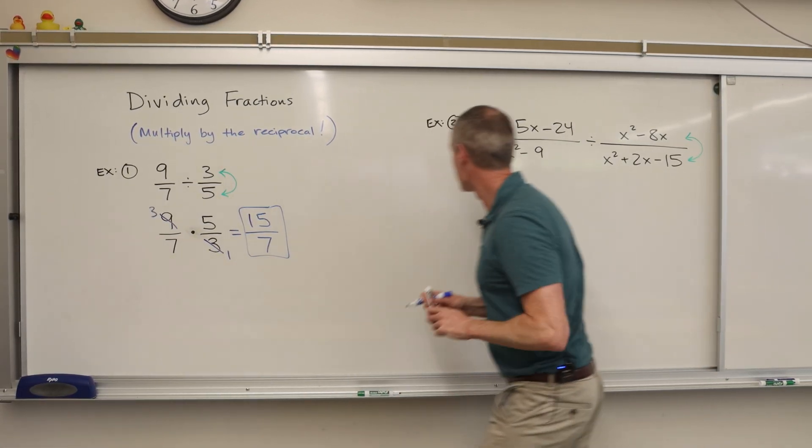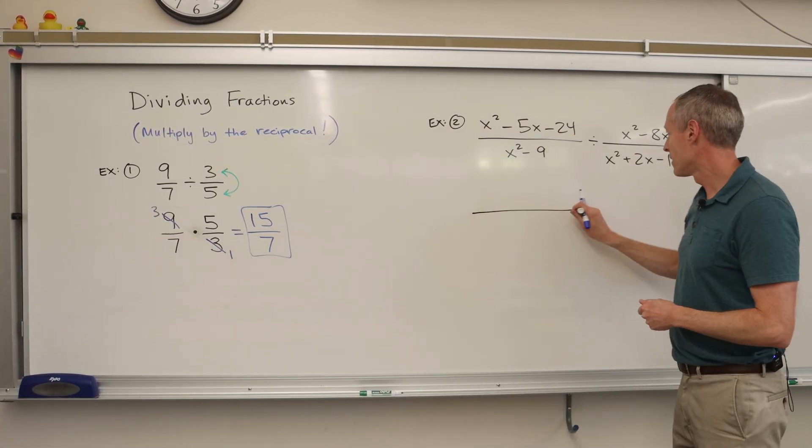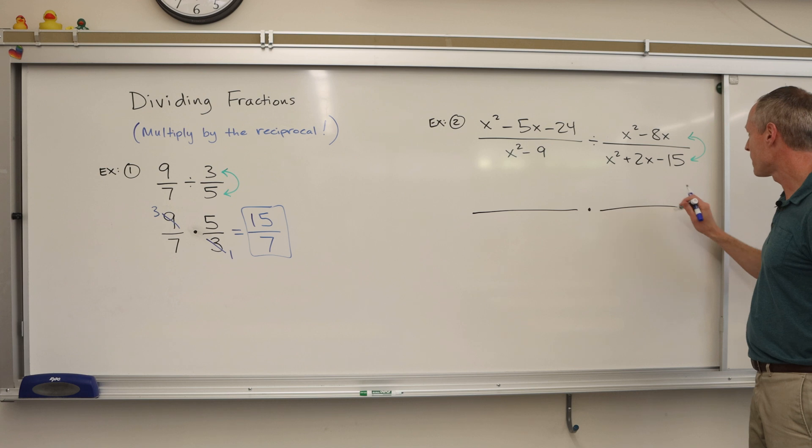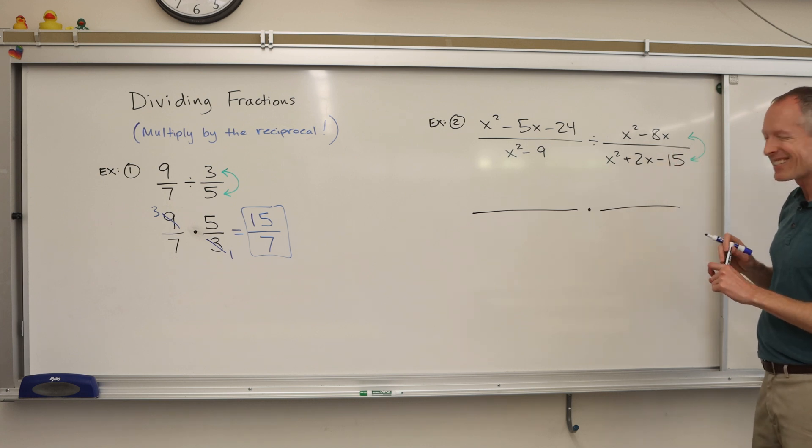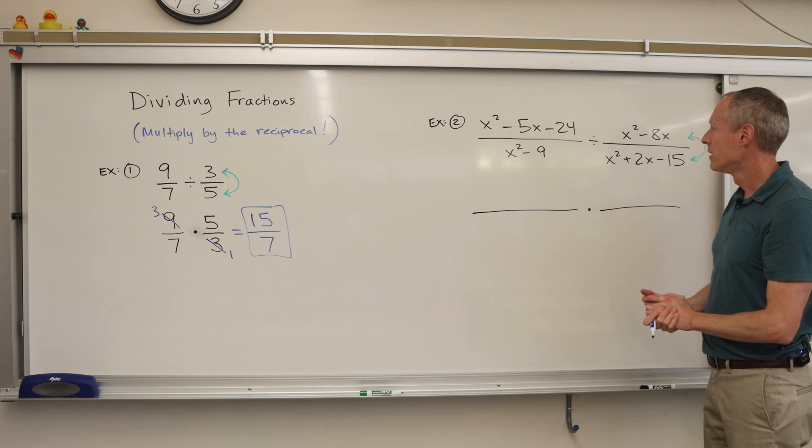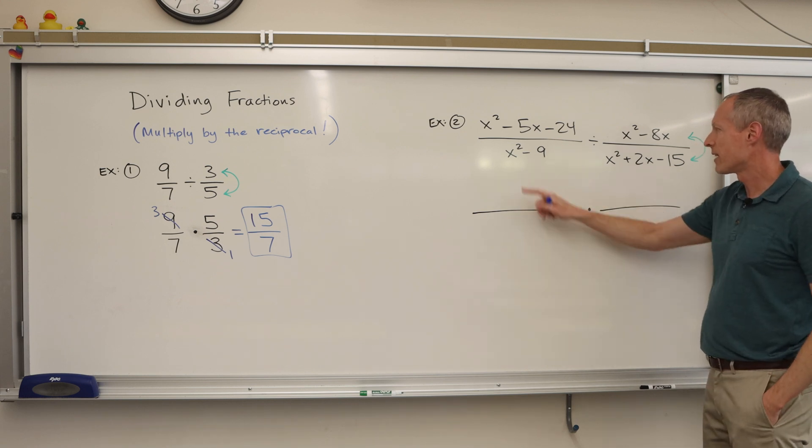And let me grab this black pen and we'll go. I usually set my fractions up. So there's my first one. I change division to multiplication and then we're going to flip this one. To save time, I usually involve factoring in this right away. So like as I'm rewriting, I factor it.